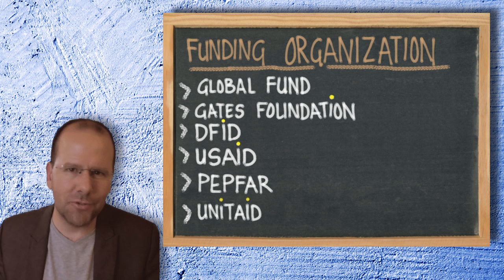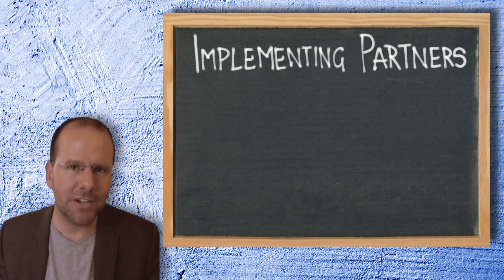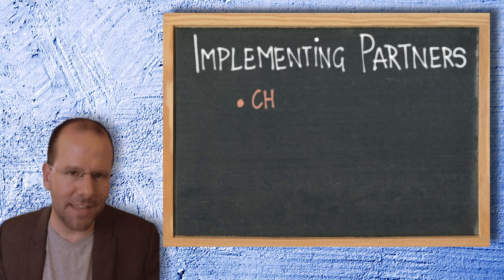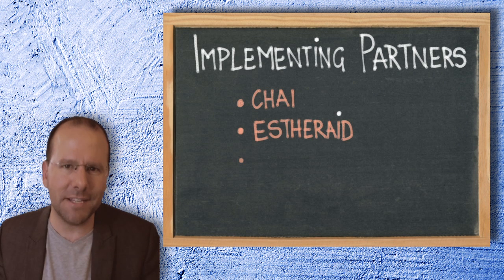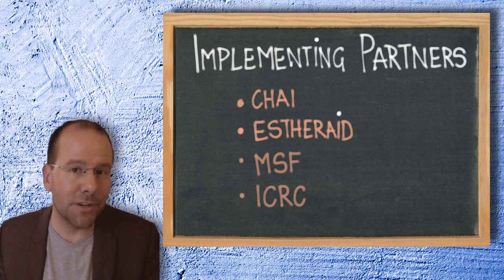These donor agencies, the bilateral or multilateral donor agencies, either provide funding directly to national programs—for example, the Global Fund gives money to countries to procure products for HIV, TB, and malaria—or they provide money to implementing partners who actually go out and do work or provide technical assistance to those governments. So these implementing partners might be the Clinton Health Access Initiative or Abt Associates or MSF or the ICRC. Some donor agencies very specifically fund research, like the Wellcome Trust funds a lot of global health research and health research.